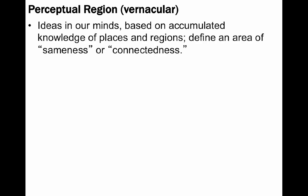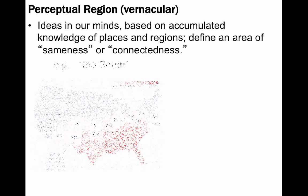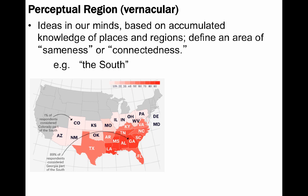A third type of region is perceptual, meaning it exists in our minds, such as our mental maps. They are based on accumulated knowledge of places and regions, and are not officially delineated or demarcated. They are also referred to as vernacular regions — to speak in the vernacular is to speak using the language and dialect of the people in the local area. Whereas formal regions have clear structure and boundaries, perceptual regions do not. As you can see on this map, it shows the percentages of people who consider different states as belonging to the South, which really is not a definite region at all.